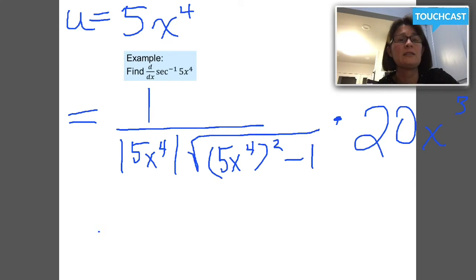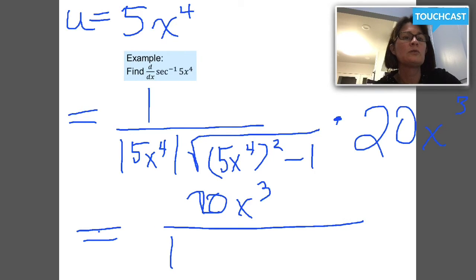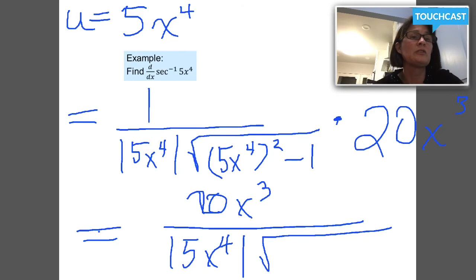Feel free to leave your answer like this. That's equal to 20x cubed over 5x to the fourth. There are lots of other ways you could simplify this expression too. 5x to the fourth, common error that they're going to maybe try to catch you on is not squaring that 5 when you square x to the fourth. So that's 25x to the eighth minus 1. Final answer.